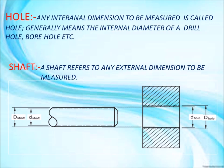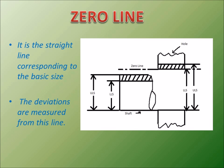What is hole? Any internal dimension to be measured is called hole. Any external dimension to be measured is called shaft. These two figures show hole and shaft. Zero line is the line which corresponds to the basic size.